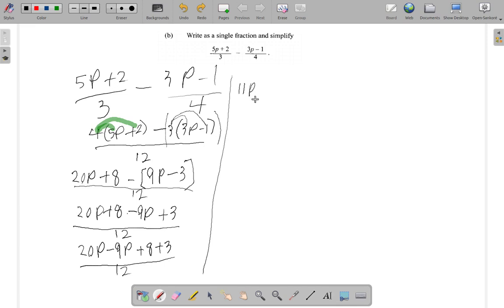8 and 3 give you 11 all over 12. So let's just review. 5P plus 2 over 3 minus 3P minus 1 over 4. Draw the line, find the LCM. 3 into 12 goes 4 times, 4 times all of this. 4 times 5P plus 2 minus, 4 into 12, 3 times all of this, 3 times 3P minus 1. And you have 4 times 5 is 20P plus 4 times 2 is 8, minus 3 times 3 is 9P, 3 times 1 negative 3 with the same negative sign here.